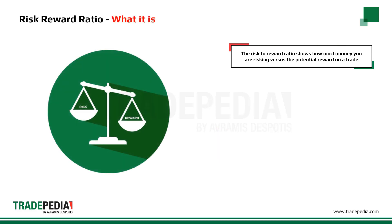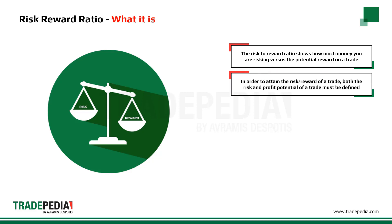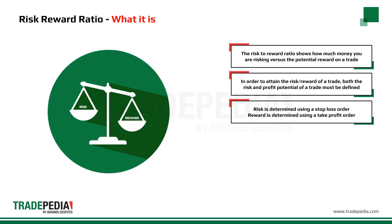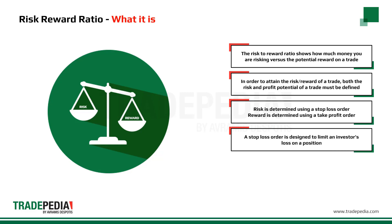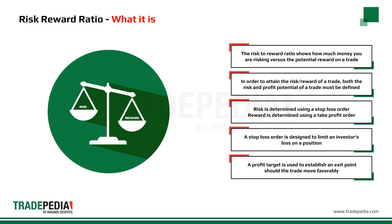The risk-to-reward ratio shows how much money you are risking versus the potential reward on a trade. While this may seem simplistic, many traders neglect to take this step and often find that they end up with large losses. In order to attain the risk-reward of a trade, both the risk and profit potential must be defined. Risk is determined using a stop-loss order, and reward is determined using a take-profit order. A stop-loss order is designed to limit an investor's loss on a position, while a profit target establishes an exit point should the trade move favorably.